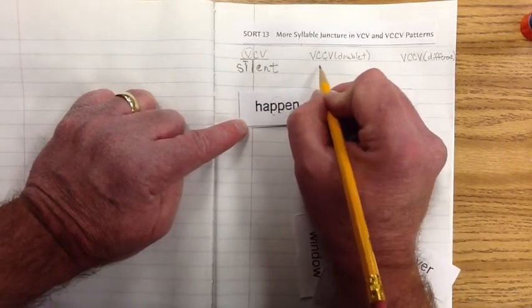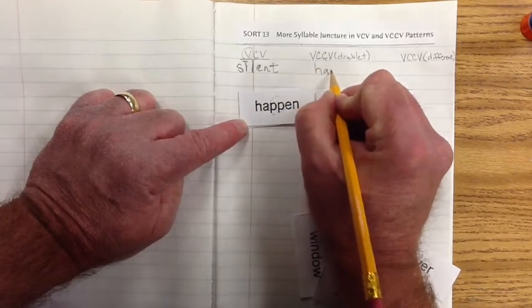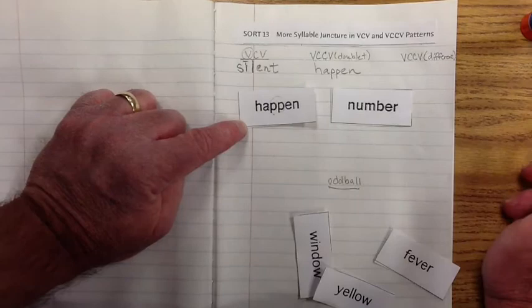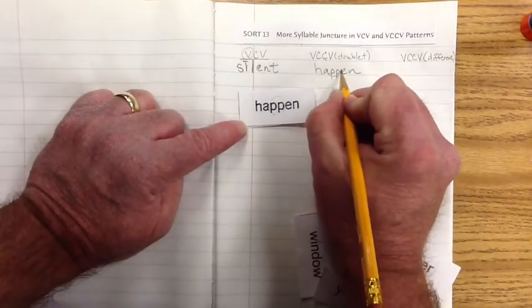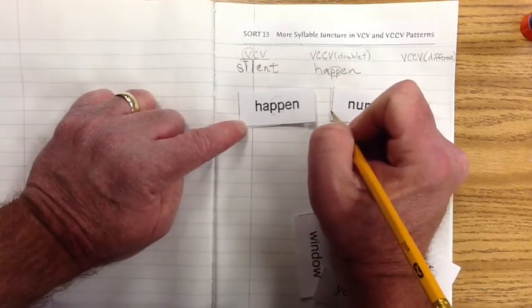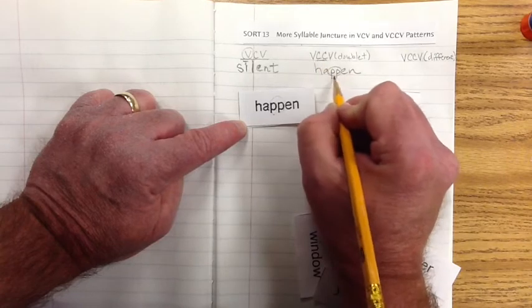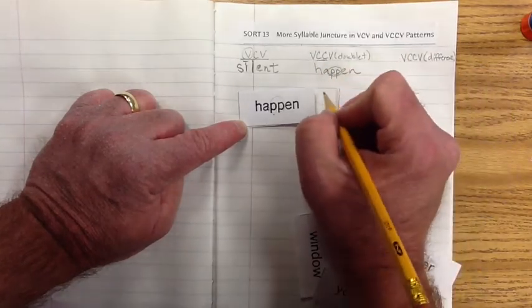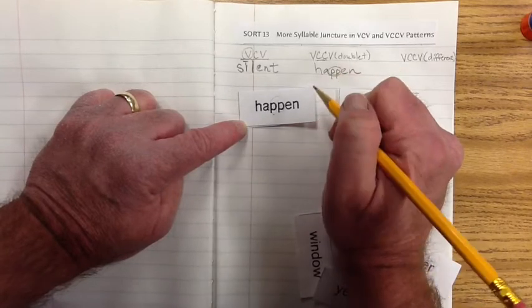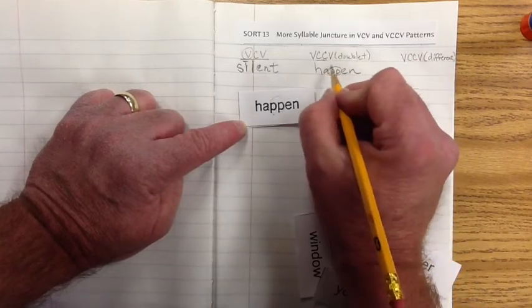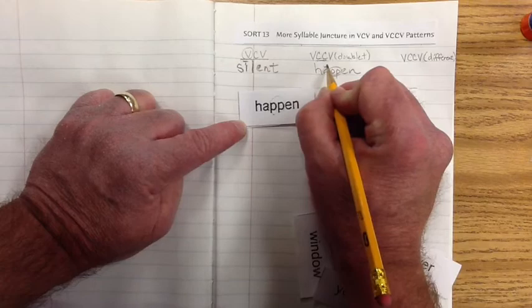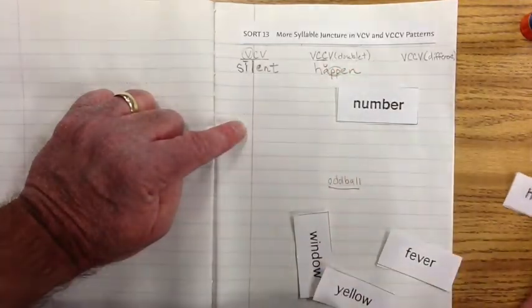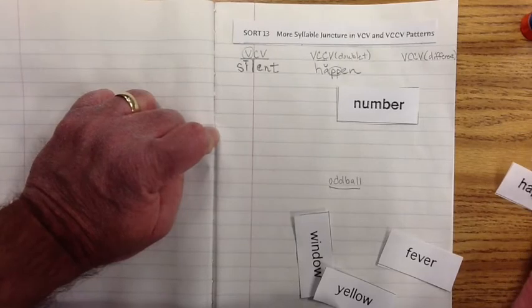So let's have that one be the doublet. That's H-A-P-P-E-N. And here's our doublet. Two letters that are the same consonant. Those two consonants are the same. That's the doublet. Let's take a look at the vowel sound. Everybody say happen. A, A, an apple, A. That's short, isn't it? And we're just going to do that and see if there's any consistency under each of the exemplars.